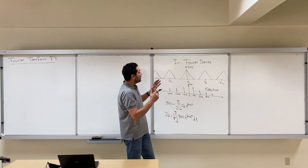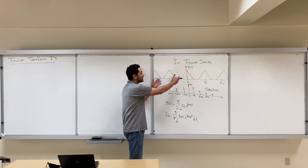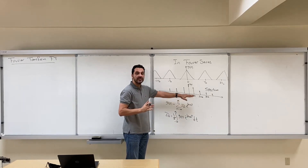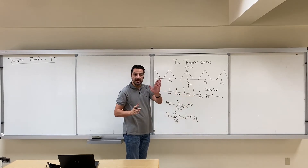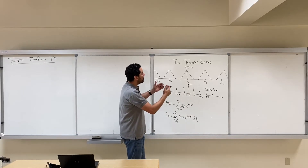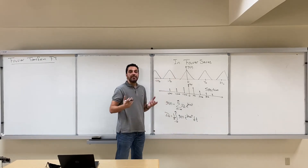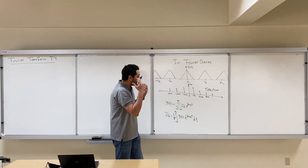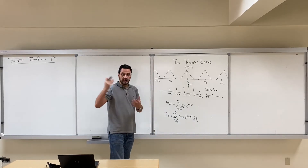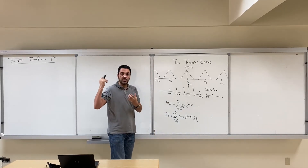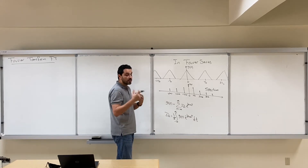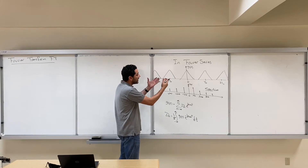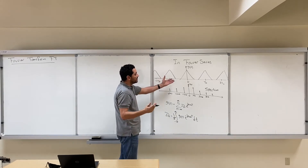In Fourier series the signal in the time domain was periodic, and the frequency domain spectrum was discrete. What happens when we move from periodic signals to aperiodic signals — signals that are not periodic? To get an intuition of what's going to happen with Fourier transform, which deals with aperiodic signals, let's find the relation between aperiodic signals and periodic signals.